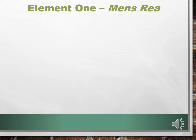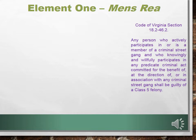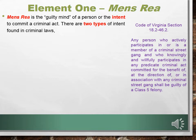Like in math or science class, we need to break our criminal law formula down into its elements to better understand it. We're going to use an example to watch our formula in action. Our example is Code of Virginia Section 18.2-462, which states: 'Any person who actively participates in, or is a member of a criminal street gang, and who knowingly and willfully participates in any predicate criminal act committed for the benefit of, at the direction of, or in association with any criminal street gang, shall be guilty of a Class V felony.' Let's break this statute down, starting with element one: mens rea, the guilty mind, or the intent to commit a criminal act.